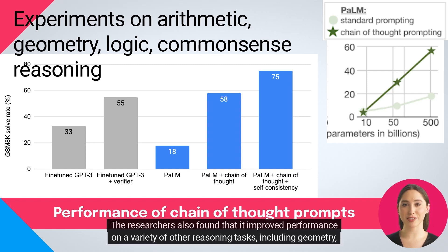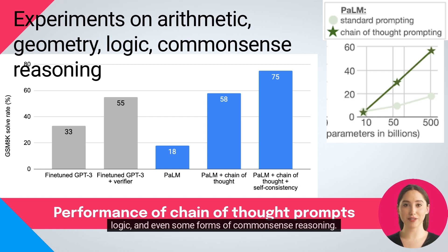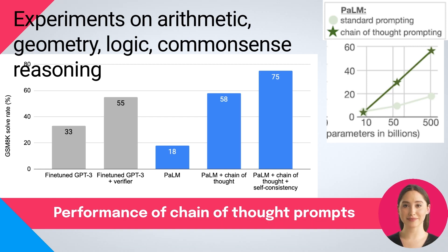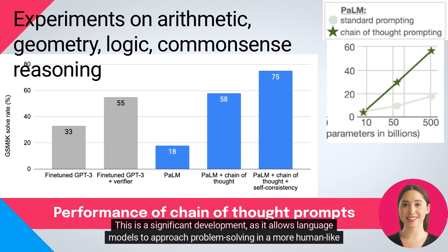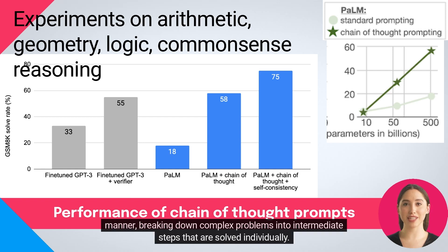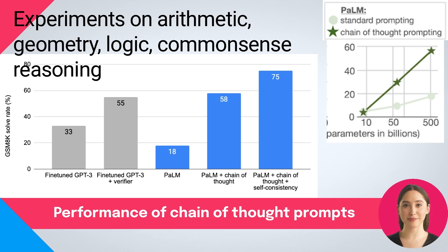But it's not just arithmetic reasoning where chain-of-thought prompting shows promise. The researchers also found that it improved performance on a variety of other reasoning tasks, including geometry, logic, and even some forms of common-sense reasoning. This is a significant development as it allows language models to approach problem-solving in a more human-like manner, breaking down complex problems into intermediate steps that are solved individually.